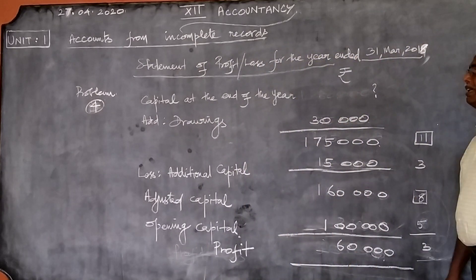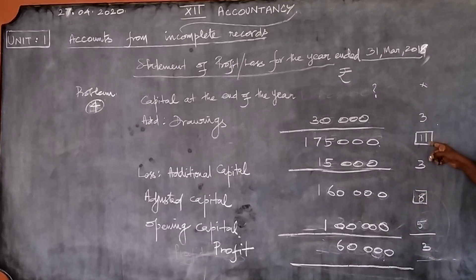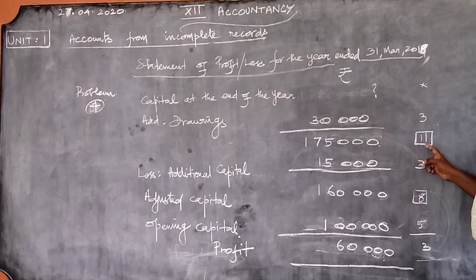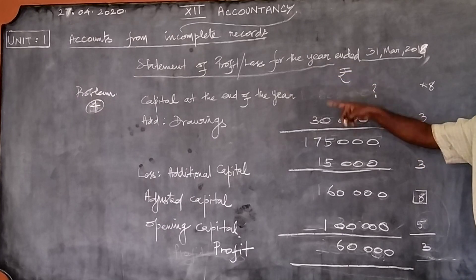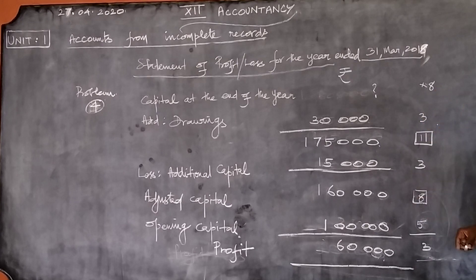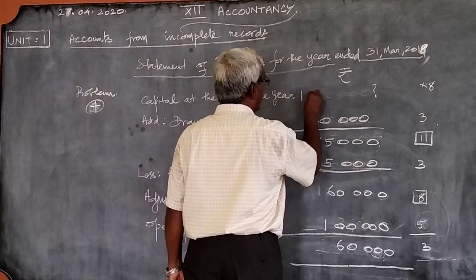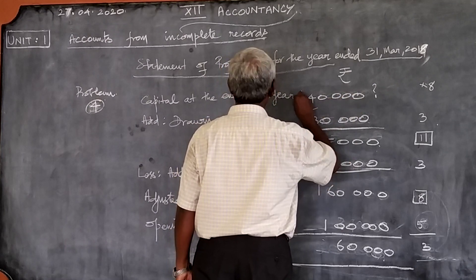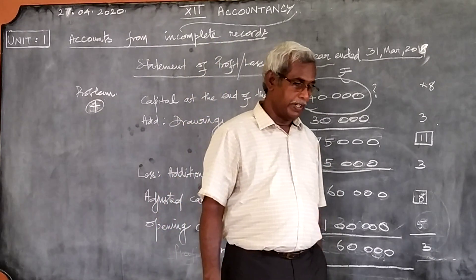Again with small numbers as example: there should be some number here, and with that number we are adding 3 to get 11. To get 11 by adding 3, the number must be 8. So we should minus 3 from 11: 11 minus 3 gives 8. Similarly, 1,75,000 minus 30,000 gives 1,45,000. This should be the capital at the end of the year. That is what is given as problem number 4.